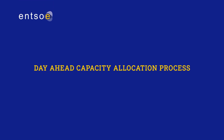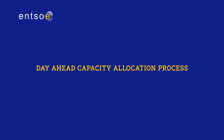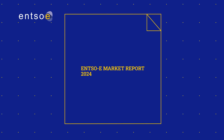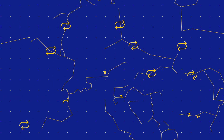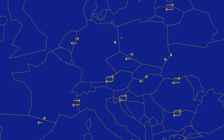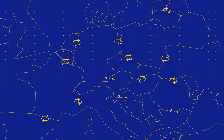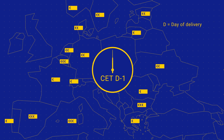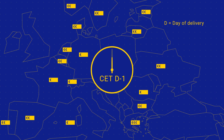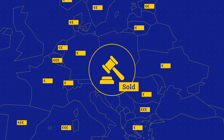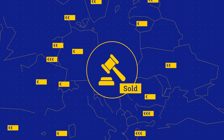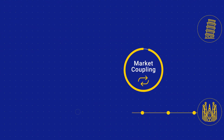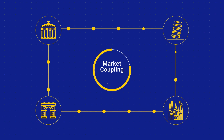This video provides an introduction to the Day Ahead capacity allocation process, as detailed in the ENTSO-E Market Report 2024. The allocation of cross-zonal capacities in the Day Ahead timeframe is performed in one pan-European auction. This auction is held daily around noon CET D-1, hence Day Ahead, and determines the Day Ahead clearing prices for all participating bidding zones for all 24 hours of the following day. This process is also known as market coupling, and it can be divided into three main phases.